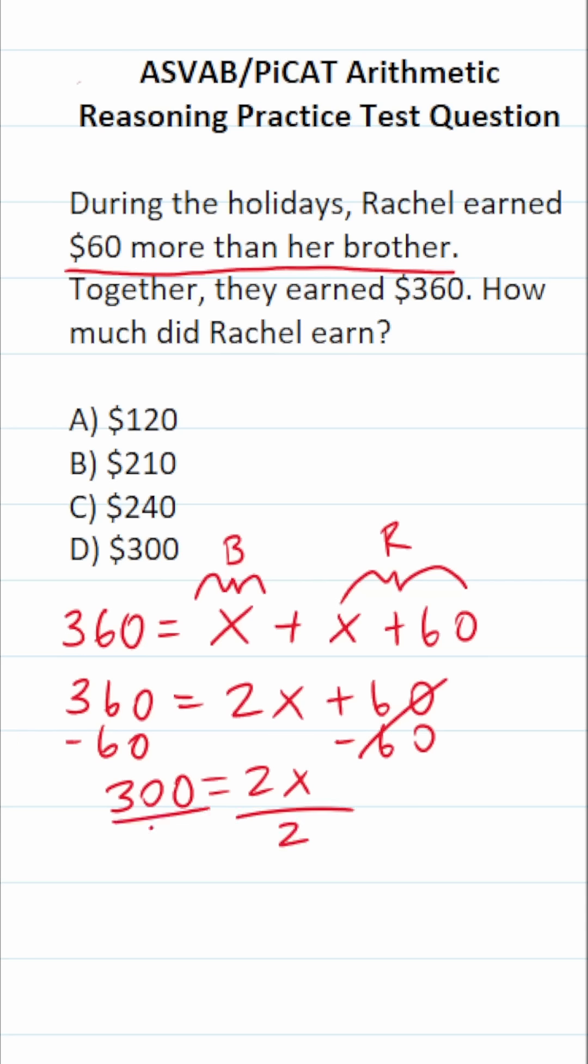We're going to divide both sides by 2 now. This crosses out, leaving you with X over here. 300 divided by 2 would be 15. Therefore, 300 divided by 2 is going to be 150. Alright, so we know X is 150.